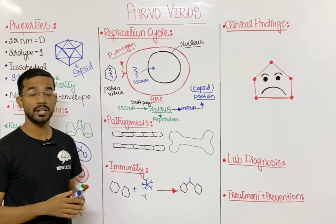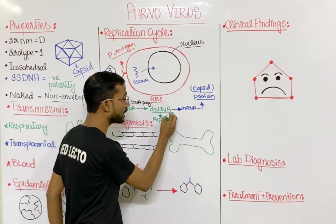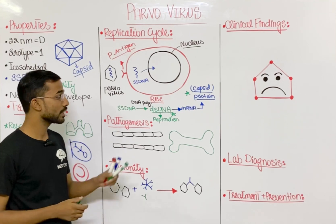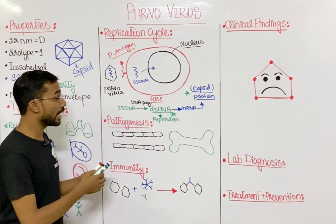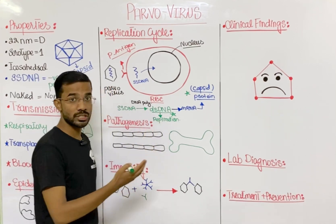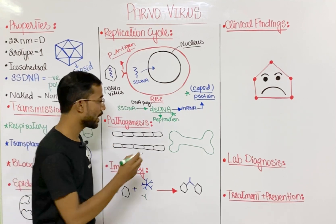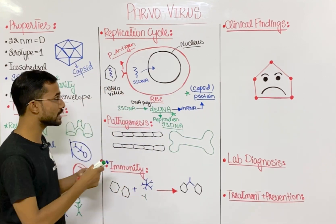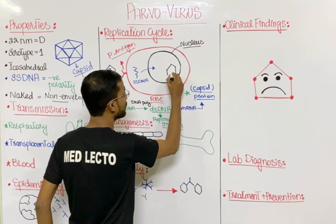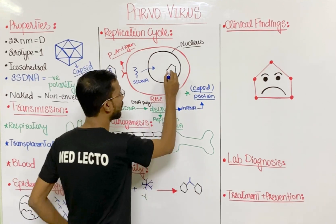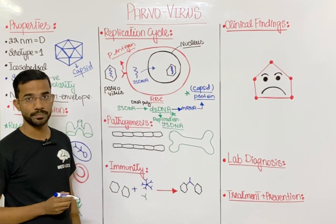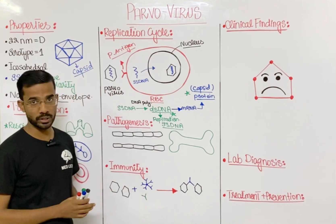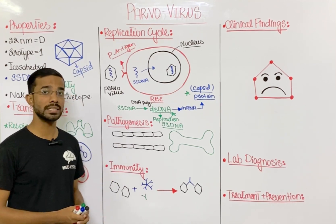The virus requires two things: genomic material and proteins. During replication, the progeny virus converts back to single-stranded DNA. The new virus particles form inside the nucleus, each surrounded by a capsid with single-stranded DNA inside. After assembly, the virus is released from the cell. These are the key aspects of parvovirus B19 replication.